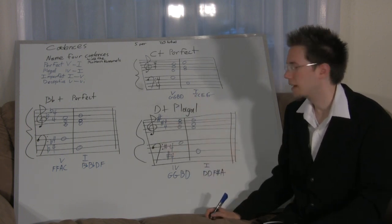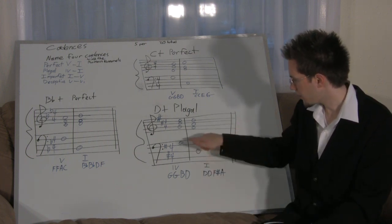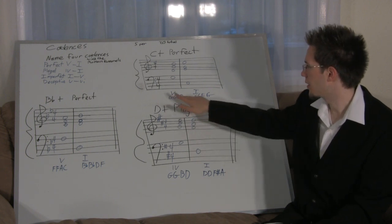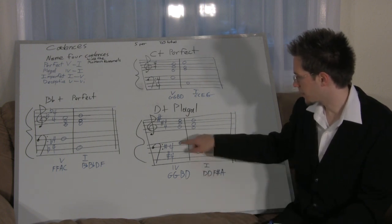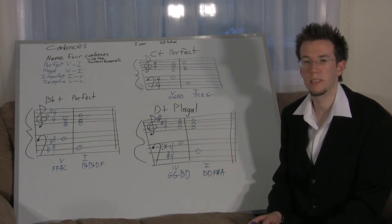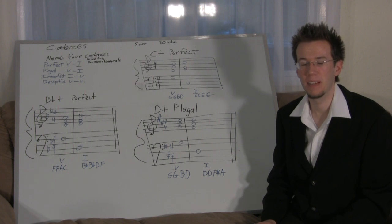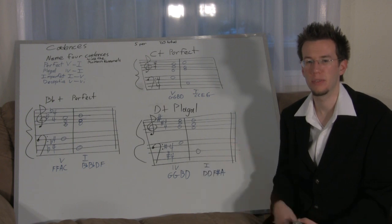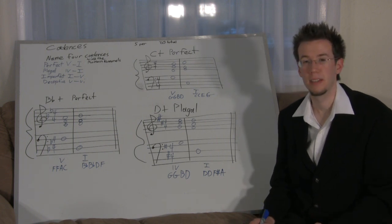Each cadence exercise is worth five marks. Check that your key signature is correct (one mark), your notes are correct (one mark), you're going in the right order such as five to one (one mark), and you only have one note in the bass clef (one mark). If you got it perfect, take five; otherwise deduct accordingly.